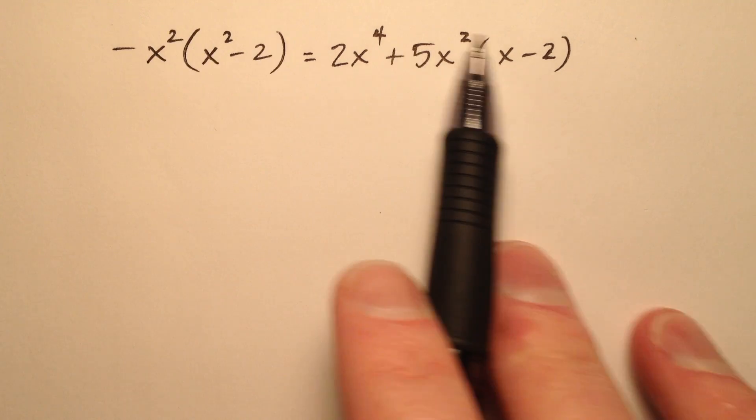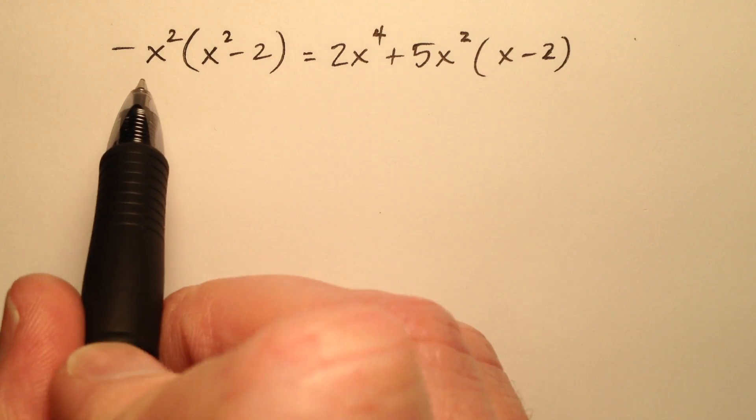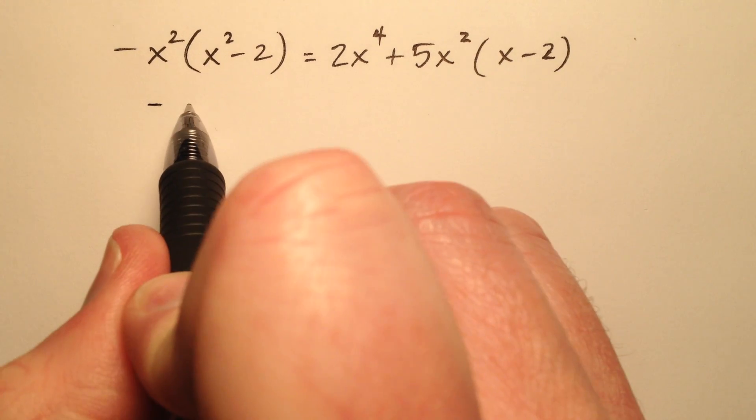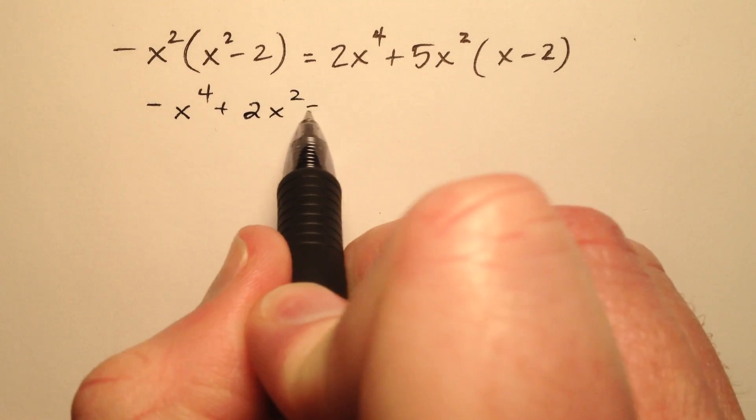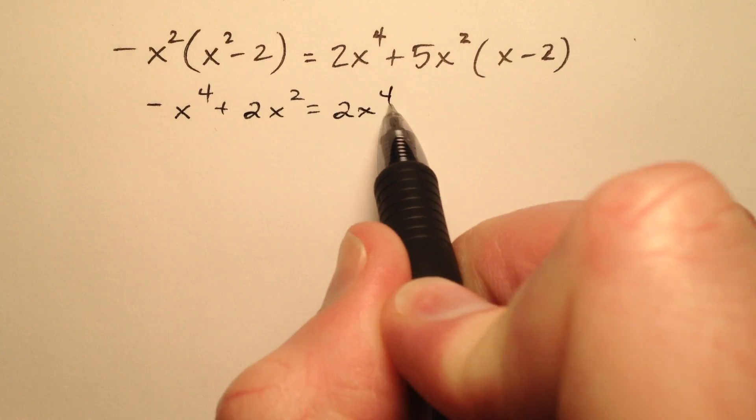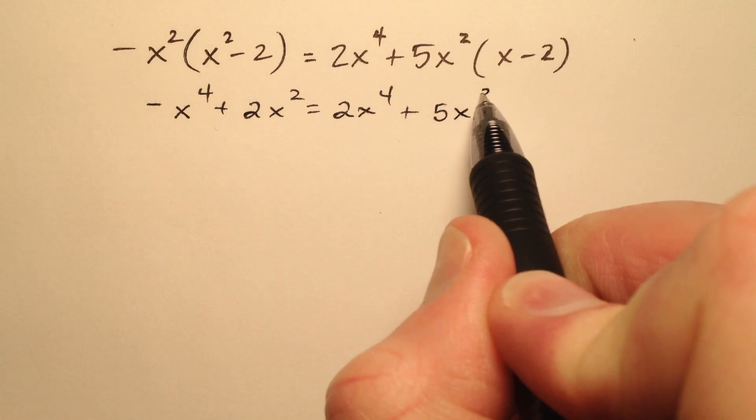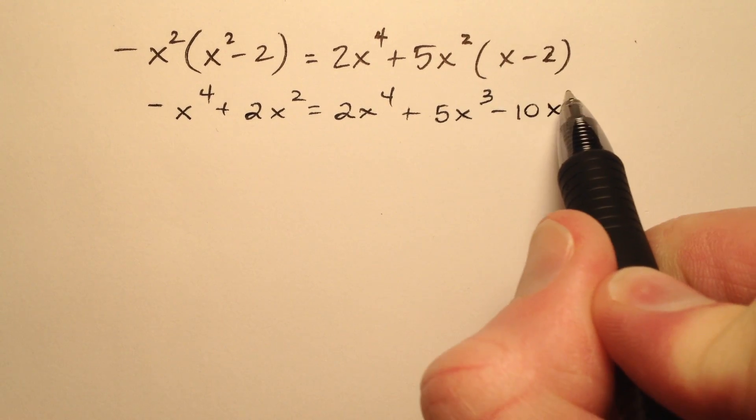Let's go ahead and distribute here and see what we have. So I'll have negative x to the fourth plus 2x squared, and that will equal 2x to the fourth plus 5x cubed minus 10x squared.